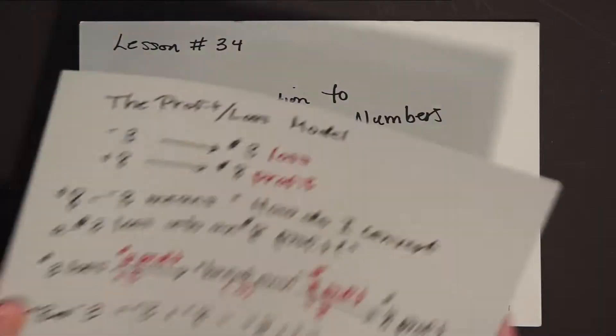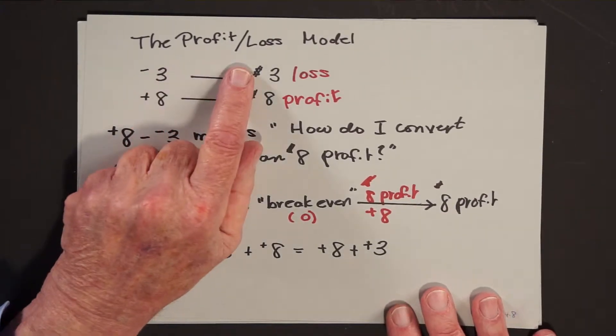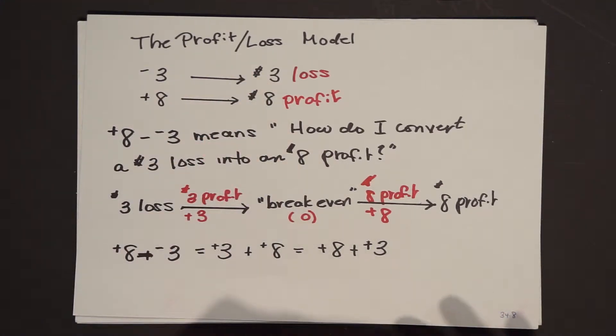For example, one day we came into class and we were introduced to sign numbers. The teacher said, now positive 3 is going to mean a $3 profit. And negative 3 is going to mean a $3 loss. And I'm saying, well, if negative 3 means a $3 loss, why aren't we just saying a $3 loss? As far as I was concerned, negative numbers would never have been invented if it wasn't for the concept of profit and loss.